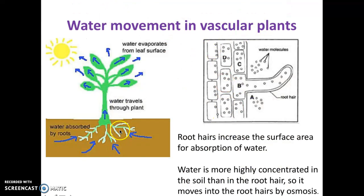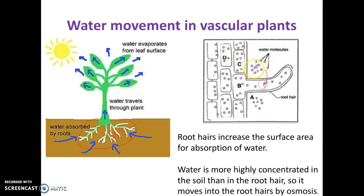Water movement in vascular plants: root hairs increase the surface area for absorption of water. The reason why plants have a lot of roots is because the more roots they have, the easier it is to absorb more water. You see all these little hairs that plant roots have — that's so they can increase their surface area. Water molecules travel into these root hairs and then move up through the xylem of the plant. They use the process of osmosis to transport that water — there are more water molecules outside than inside the cell, so water molecules move into the cell. No energy is required by the plant to move those molecules into the root hair.